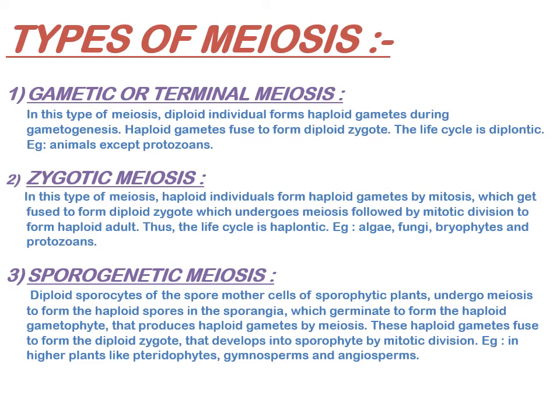There are three types of meiosis. In gametic or terminal meiosis, diploid individuals form haploid gametes by meiosis during gametogenesis in gonads; haploid gametes fuse to form a diploid zygote, which by mitosis forms the diploid adult. The life cycle is diplontic and examples include animals (except protozoans). In zygotic meiosis, haploid individuals form haploid gametes by mitosis; these fuse to form a diploid zygote, which undergoes meiosis followed by mitotic divisions to form the haploid adult. The life cycle is haplontic and examples include algae, fungi, bryophytes, and protozoans.